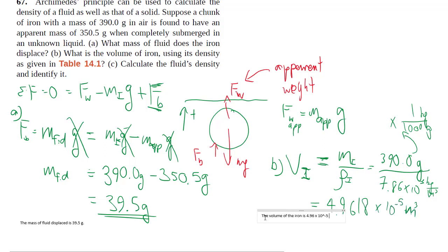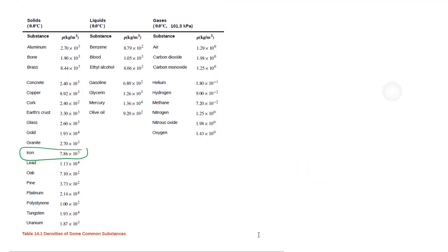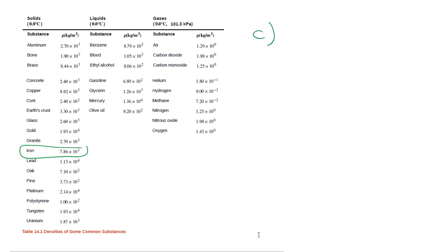And moving on to part C, right beside our table 14.1, we want to find the density of the mysterious fluid, which is going to be the mass of the fluid displaced, divided by the volume that's displacing it which is the volume of the iron. As we find out this is my 39.5 grams again dividing by a thousand and then that number we got from last part of the question.